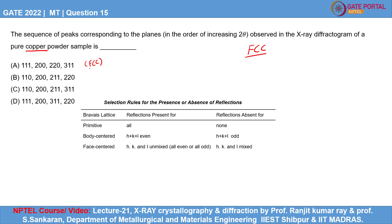While in case of option B, if you look at 211 and 110, they have H, K, L as mixed. So it is not FCC.